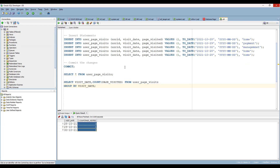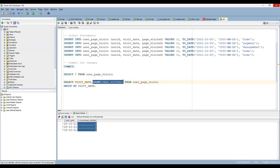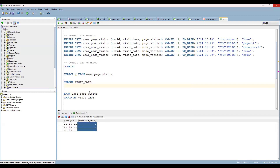You will get some output, but that's not what we want. We want to segregate how many people visited the home page, how many visited the payment page, and how many visited the management page. If no one visited the payment page on a given date, we should get zero — not just skip it.